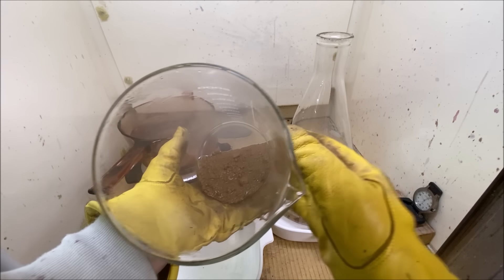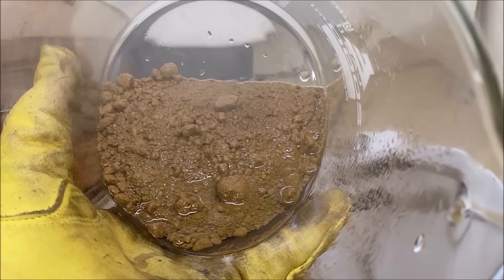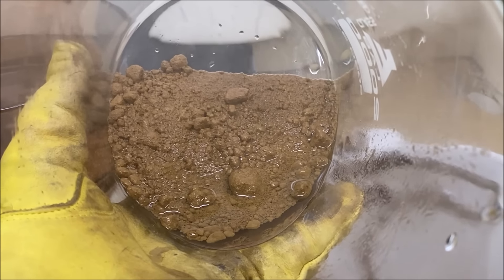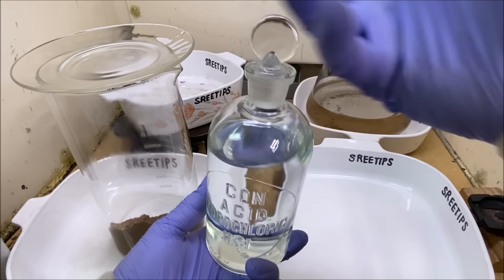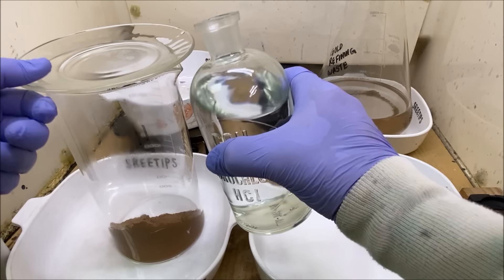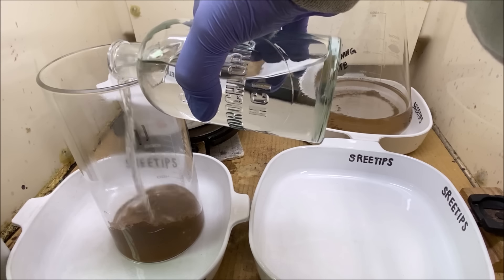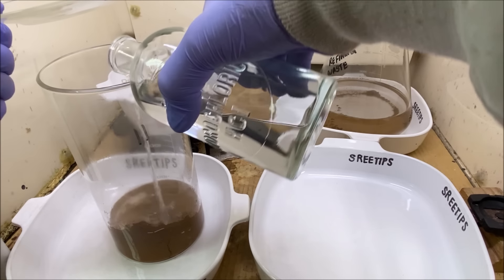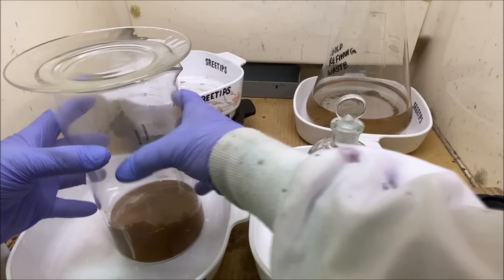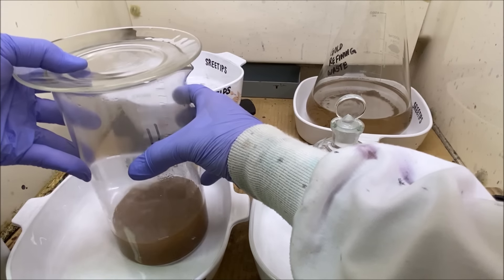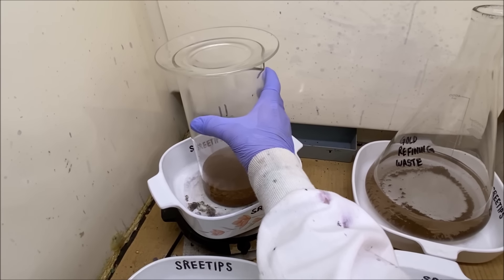Here's our gold down in our beaker. Look at that, man, looks beautiful. I've got some hydrochloric acid. We're going to boil the gold with some hydrochloric acid now. This will help remove any remaining iron that may be in there. Set that up on the heat and let it come to a boil.